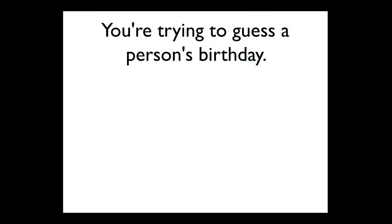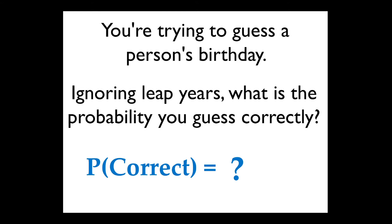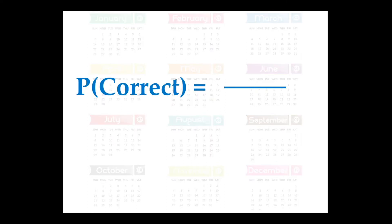Think about this: you're trying to guess a person's birthday. Ignoring leap years, what is the probability you guessed correctly? There are 365 days in a year. The denominator is 365 because that's how many different outcomes are possible — you can guess any one of the 365 days.